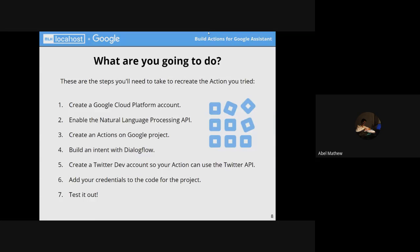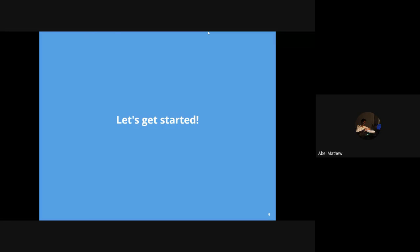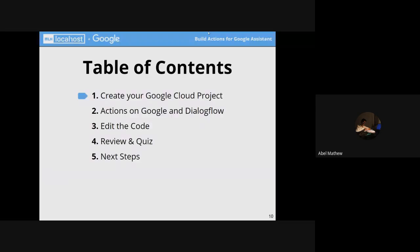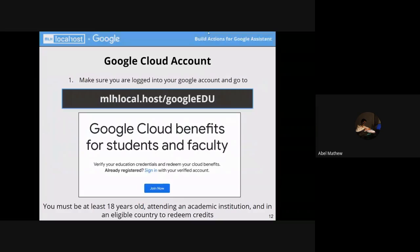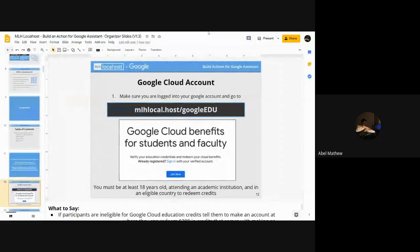We need to do some pre-workshop setup to get the API keys and set everything up. Let's see how it is done. The first step is to create a Google Cloud project. I suppose all of you have a Google account, otherwise you can create one.